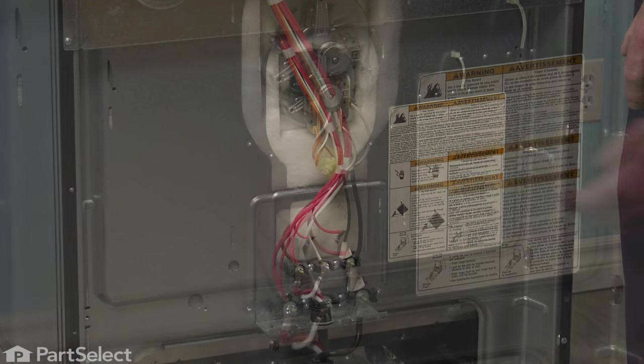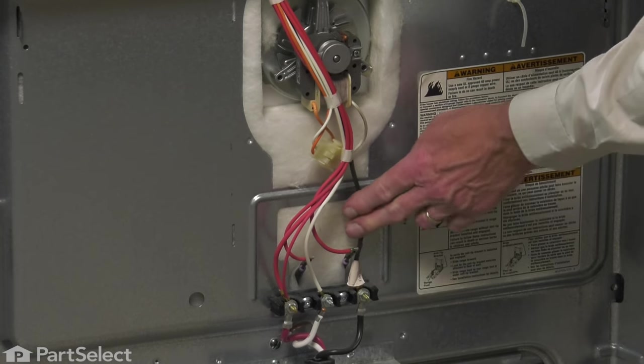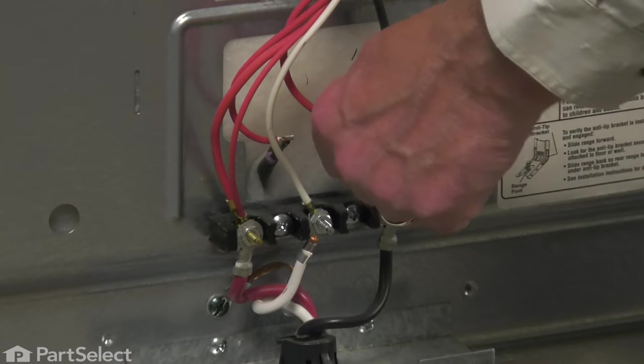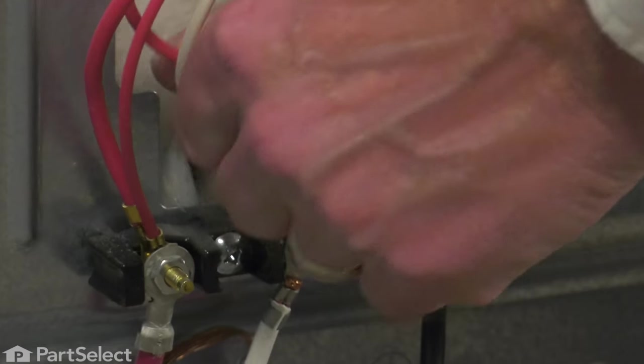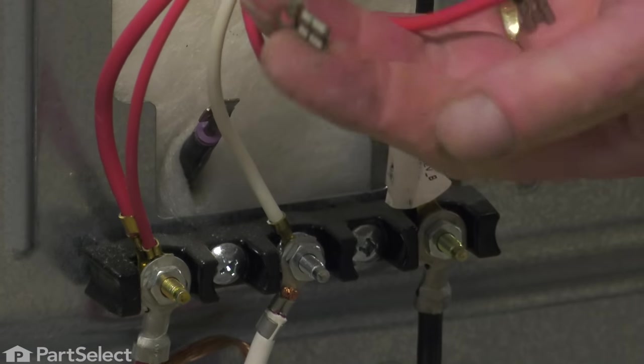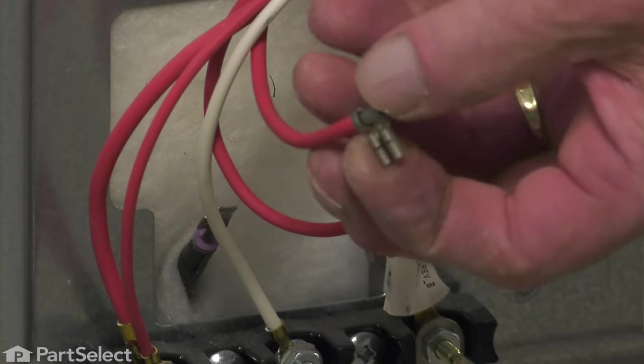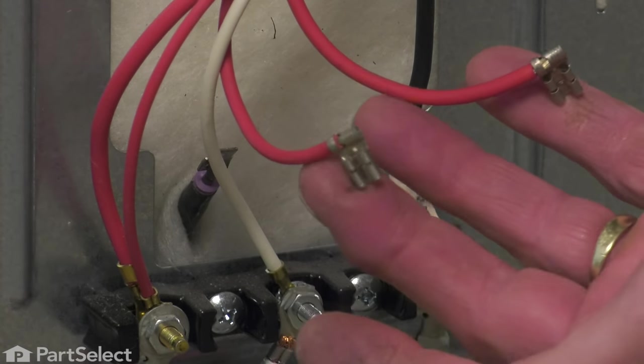We'll set that aside and then we can disconnect the wire terminals to that bake element. We'll inspect those terminals, look for any signs of arcing or corrosion or any damage. If there is, you'll need to replace those terminals.